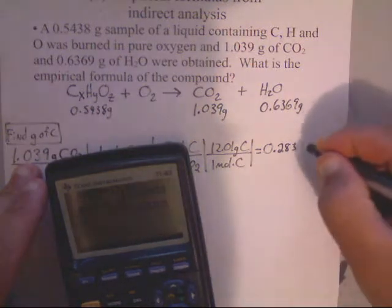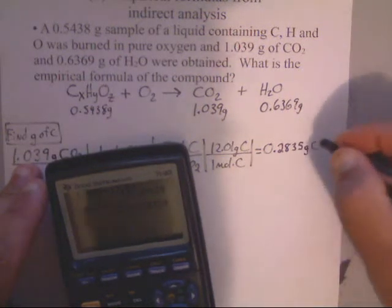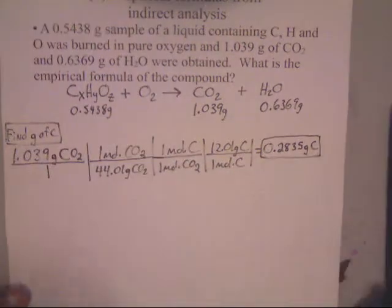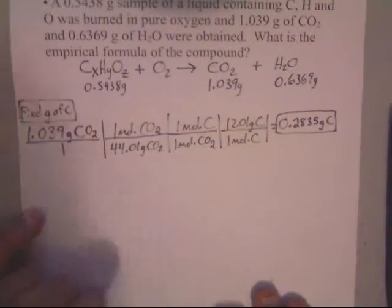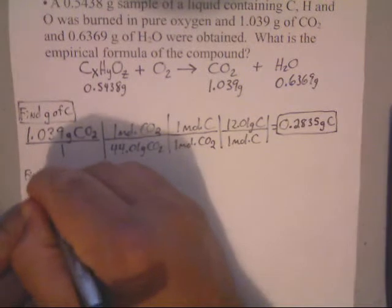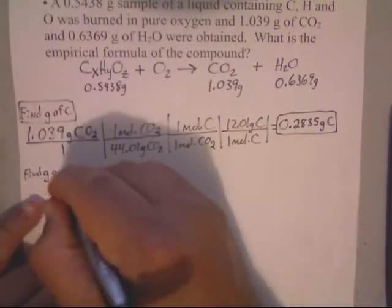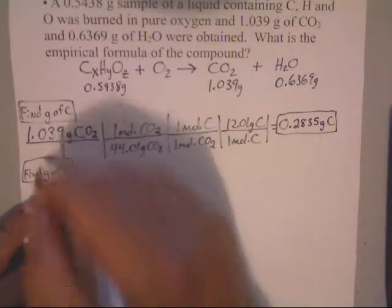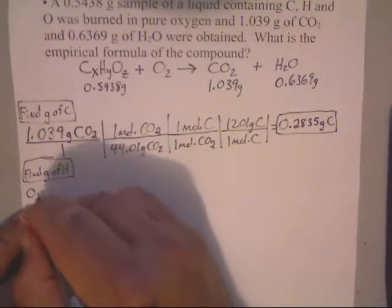Now I need to do this for the hydrogen. I was given, now we've got to find grams of hydrogen. That's my next step. I write down 0.6369 grams of H2O, and I find that.